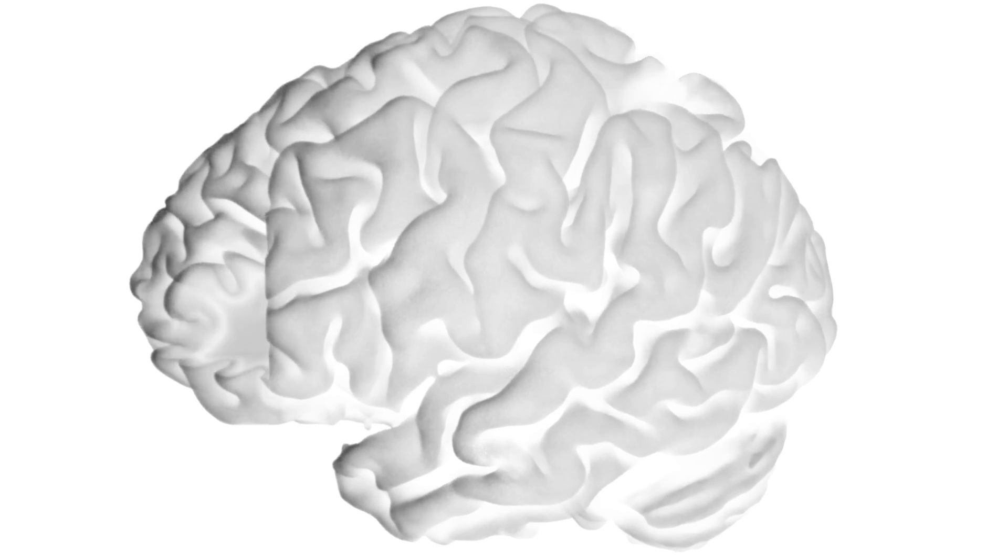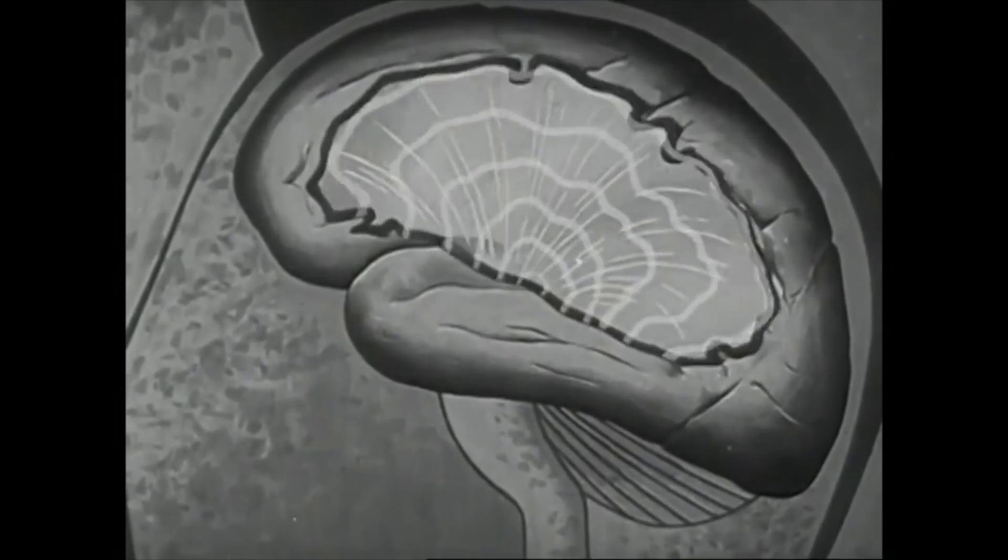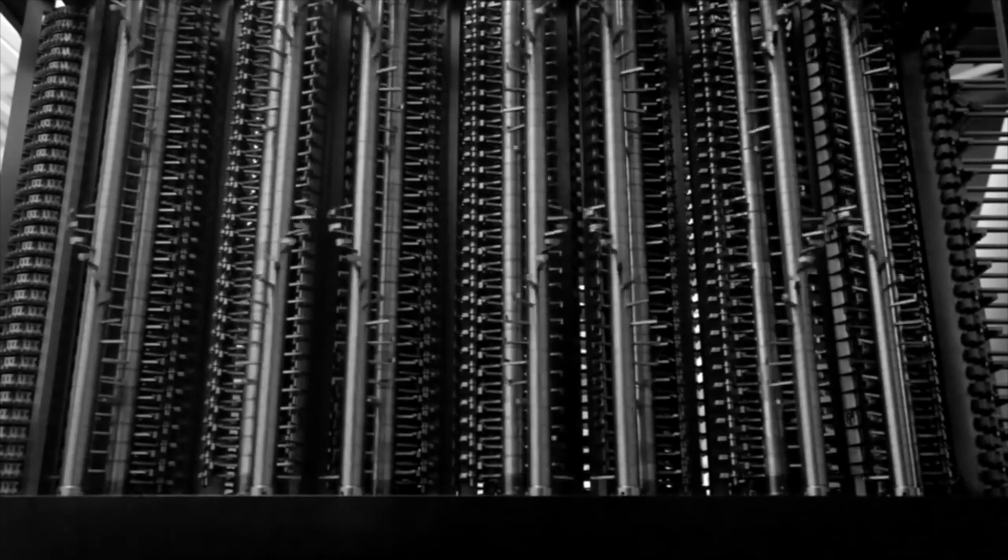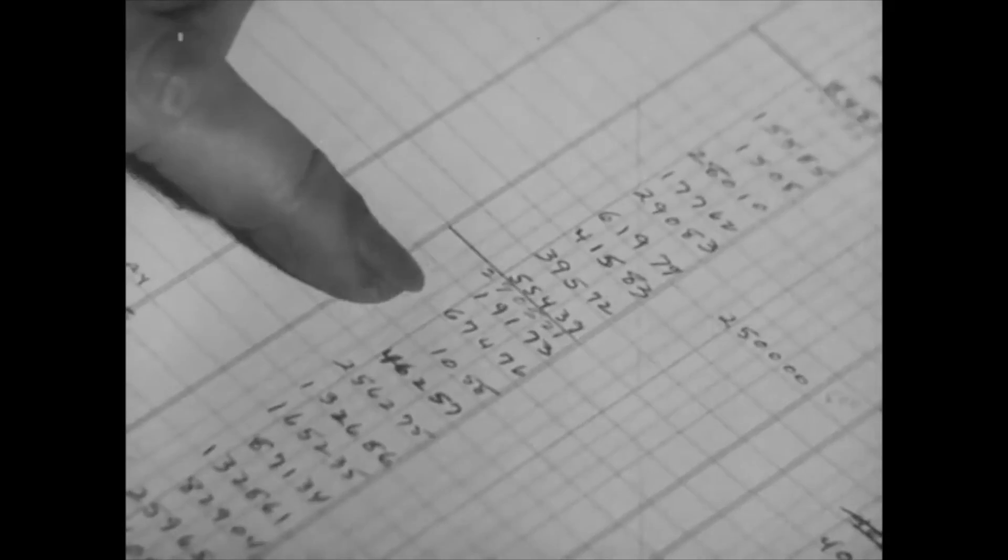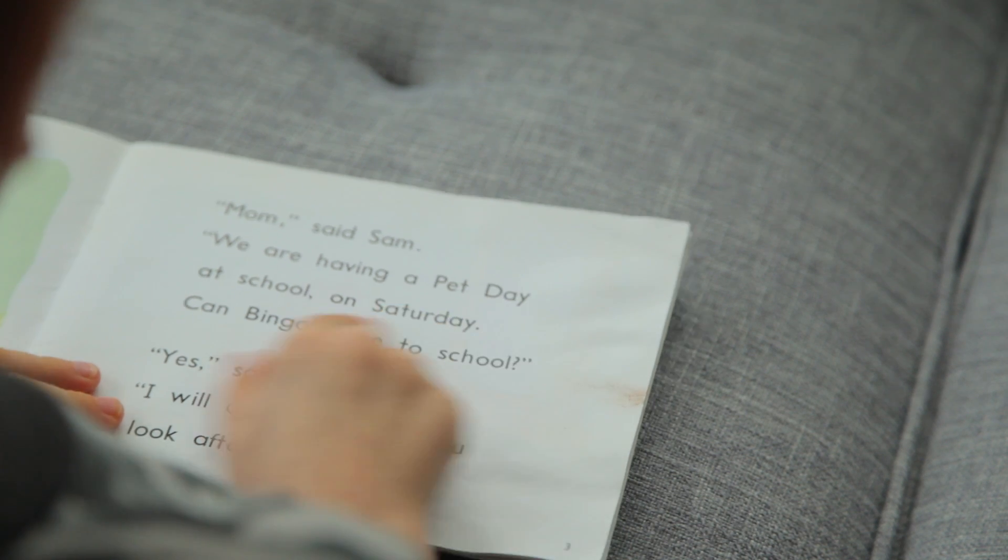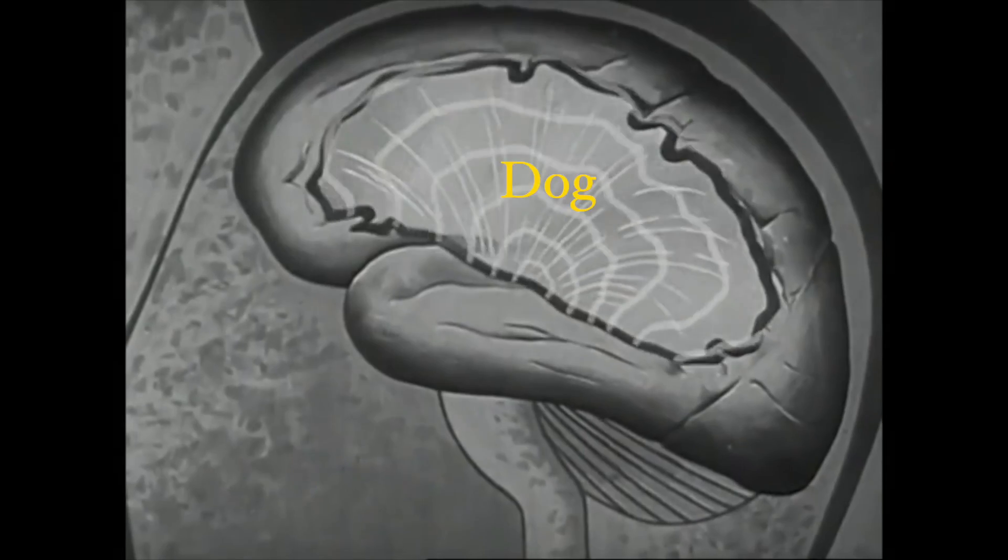We can all relate to the fact that our minds have at least two modes of thought. One is driven by sense and feel, the intuitive part. It happens fast and automatically. The other is driven by concepts, the logical part. It's slower and happens in steps. You can think of the logical part of your mind as your ability to think in sentences, while the intuitive part is your ability to think with feelings.